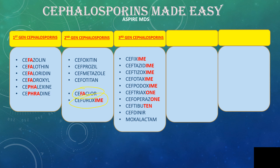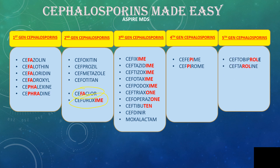Moxalactam doesn't contain 'CEPH' in its name, yet it still falls in the third generation Cephalosporins. Fourth generation Cephalosporins contain the word PI — so Cefepime and Cefpirome are the fourth generation. Fifth generation Cephalosporins contain ROL — Ceftobiprole and Ceftaroline.